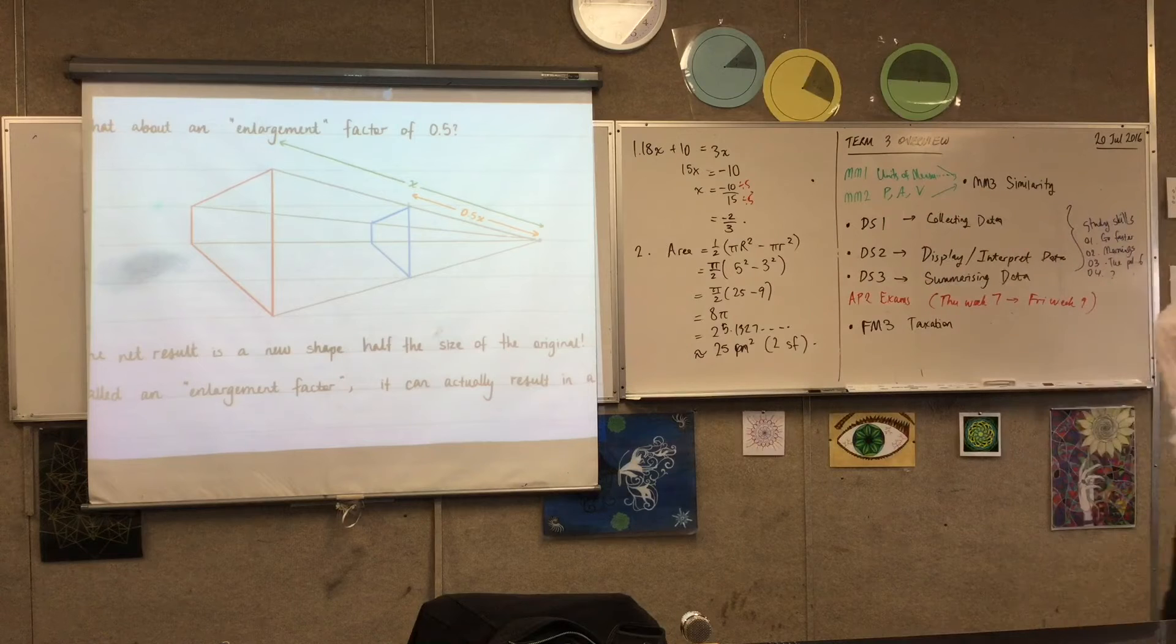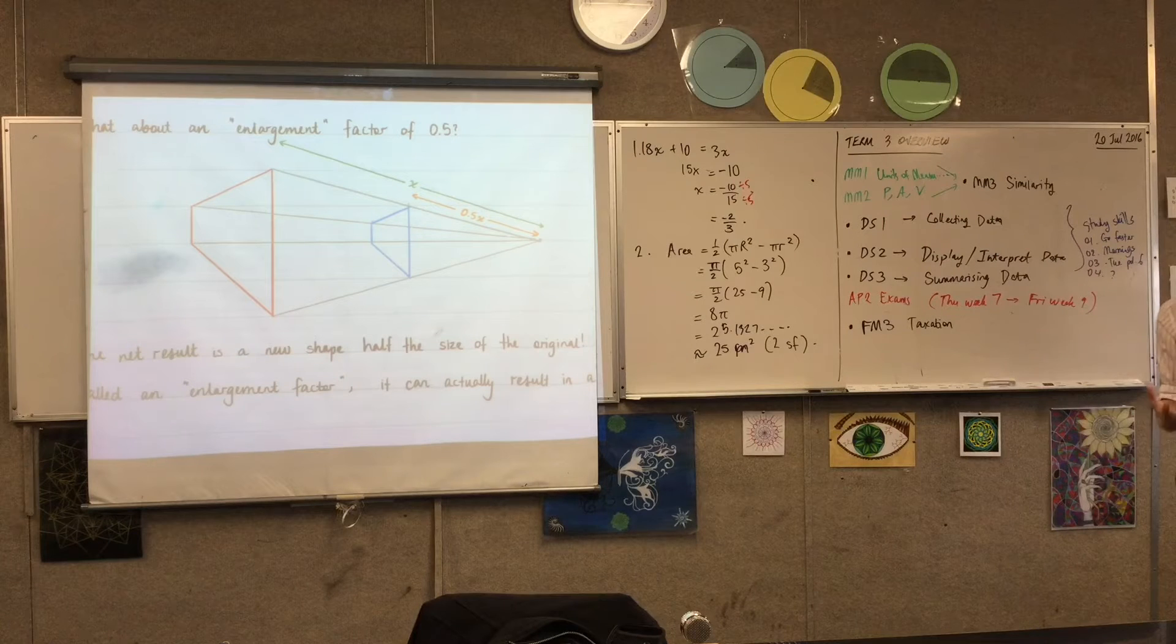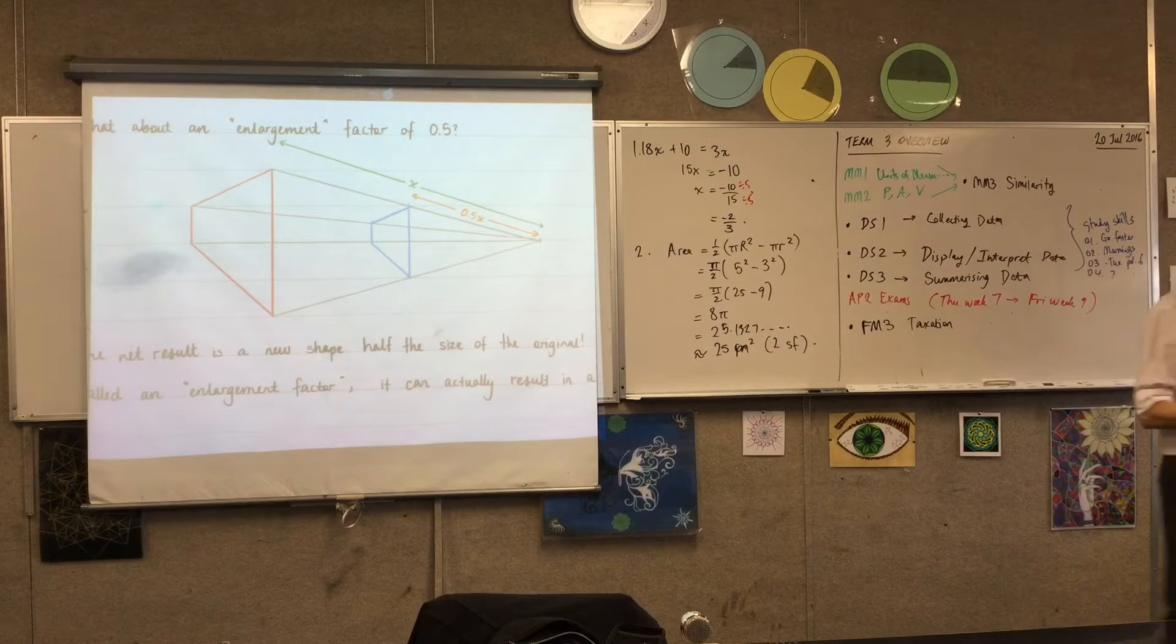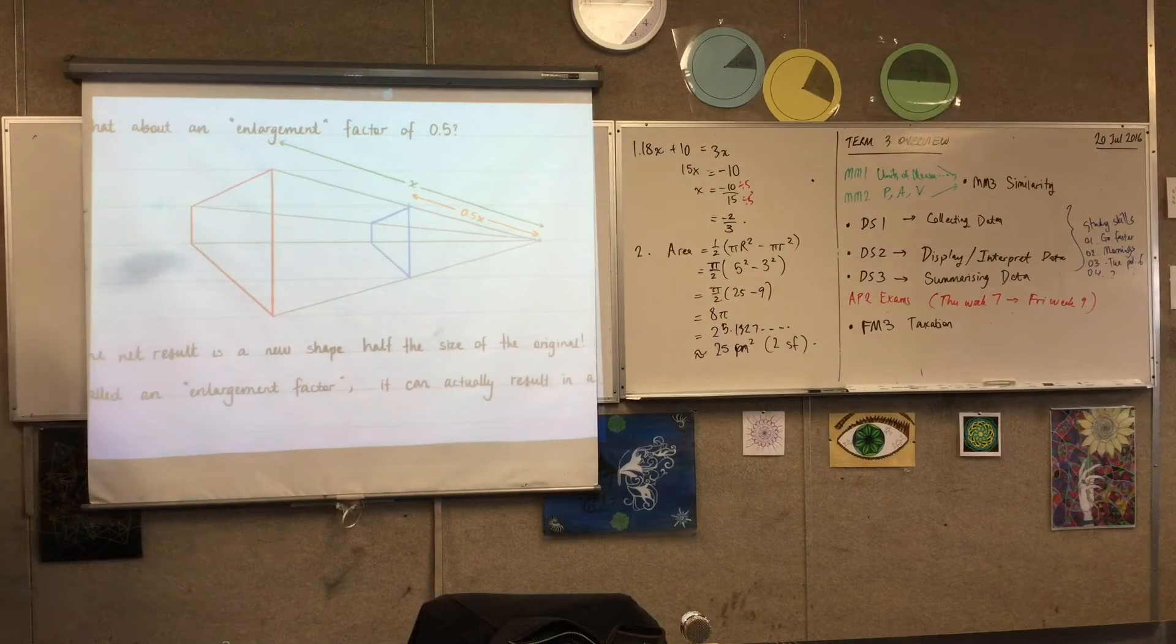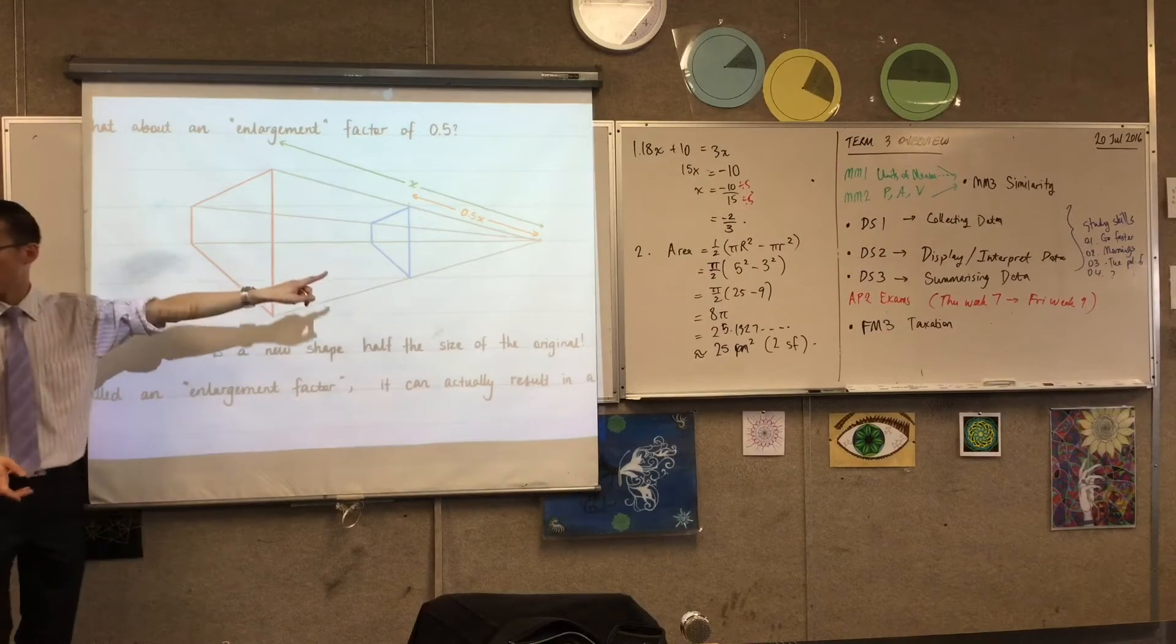Now, this is confusing because it's called an enlargement factor, but if you come back to the definition, so for example, remember, I said here's my red one which is my original shape. By the way we call these the original and the image.